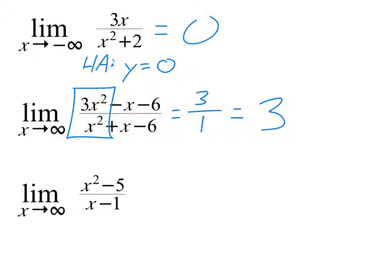For this last one, notice it's top-heavy. Since it is top-heavy, it doesn't have a horizontal asymptote. And yet, there is a limit as x approaches infinity here. In order to figure that out, we look at those two terms and simplify: x squared over x is just x. The limit as x approaches infinity of x is infinity, so the limit of that fraction is infinity. Simplify those two highest degree terms on the top and bottom, and that tells you what the end behavior and the limit is.